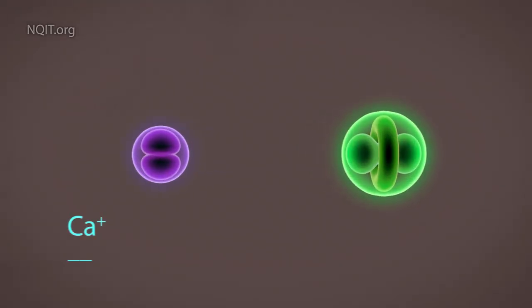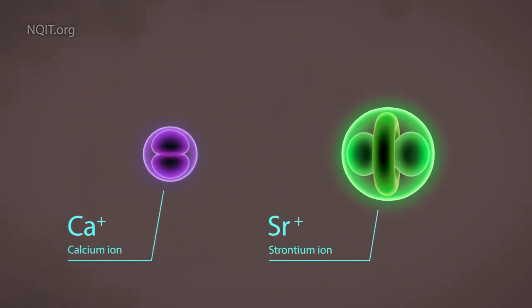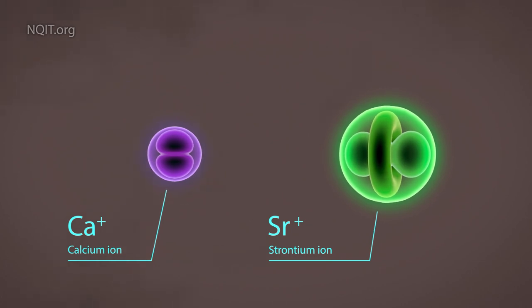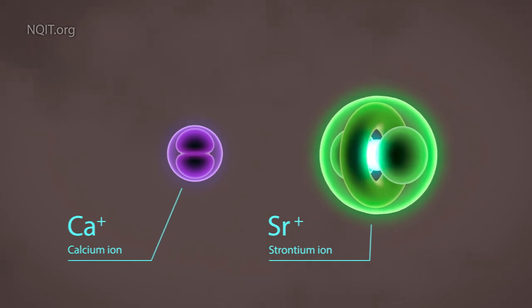An ion is a charged atom. Here we see two of them, a calcium and a strontium ion. They are superb controllable quantum systems and we can store information into either one.